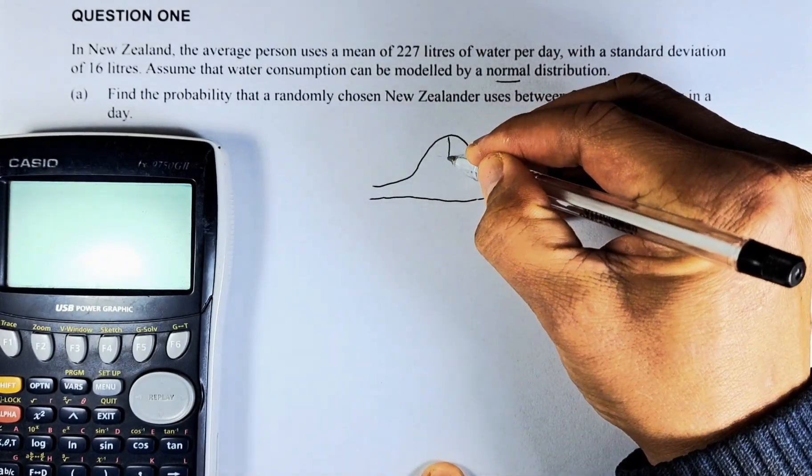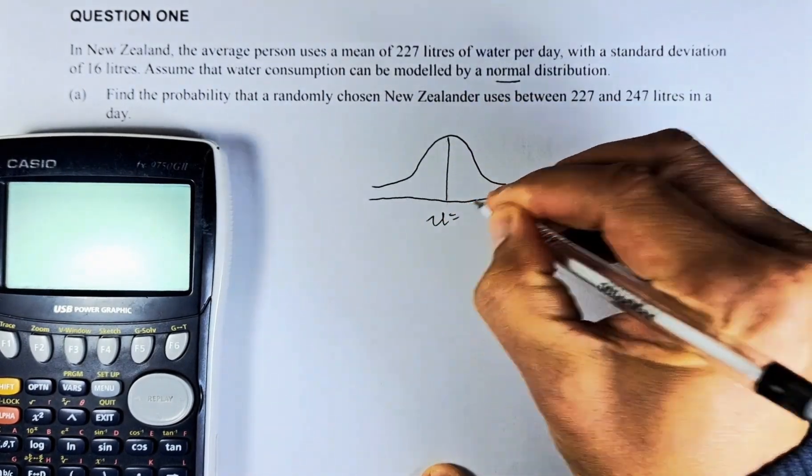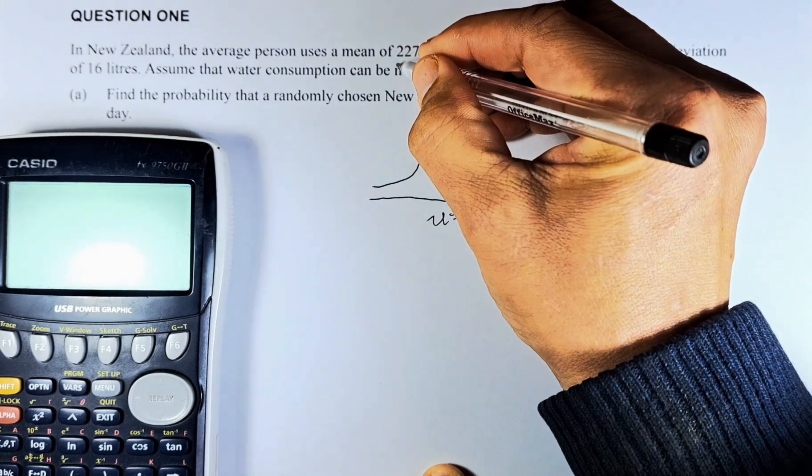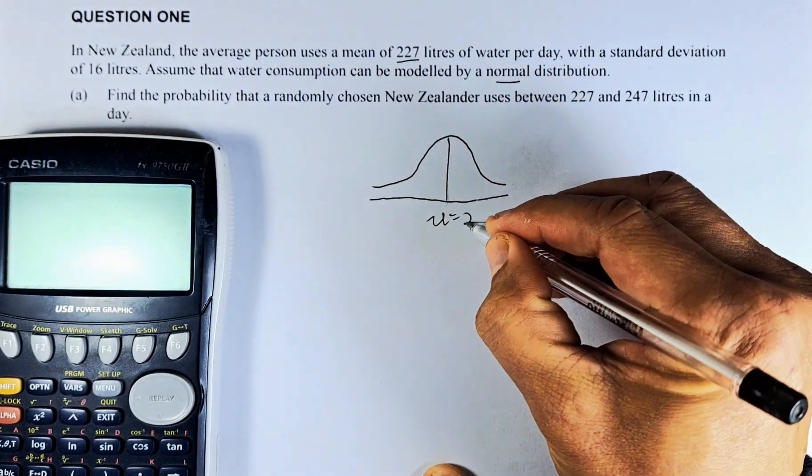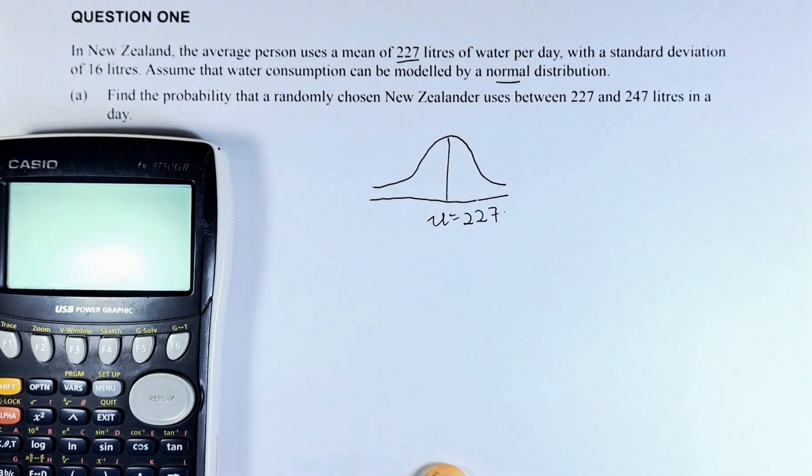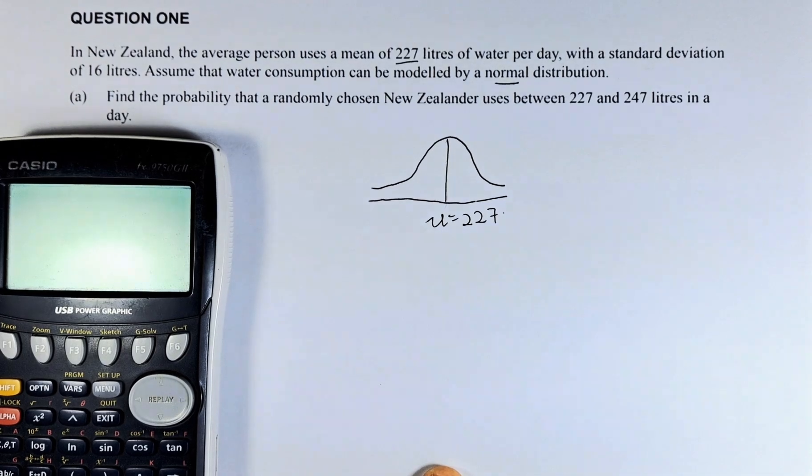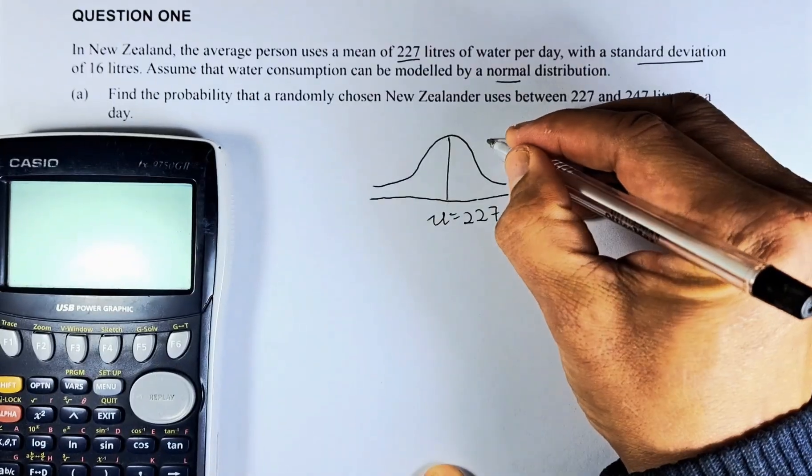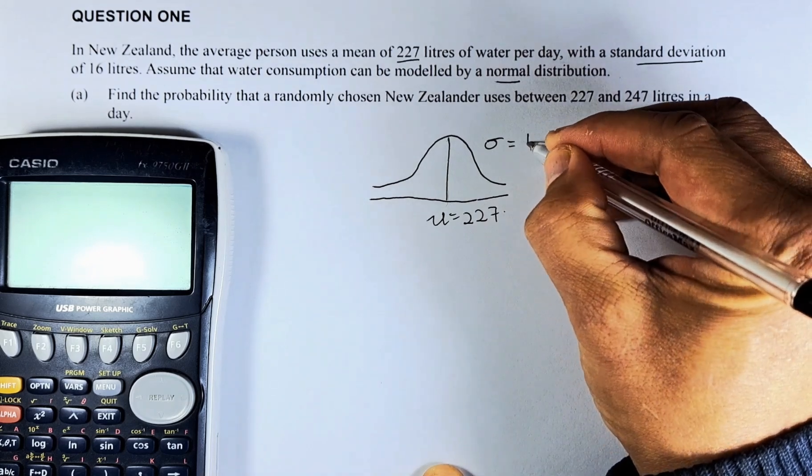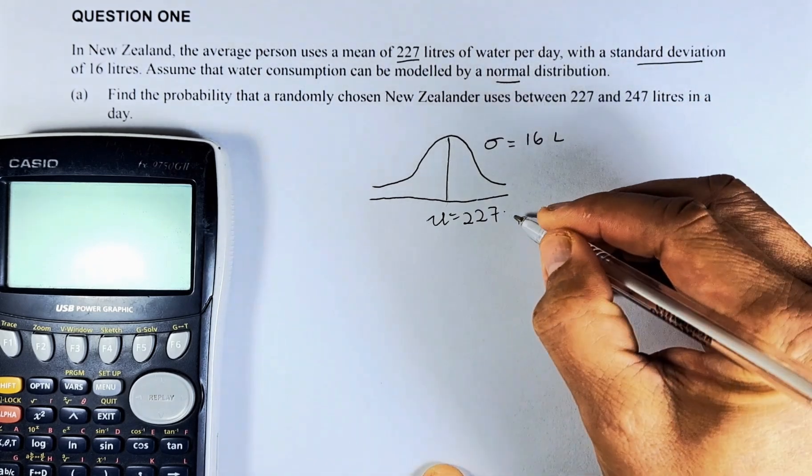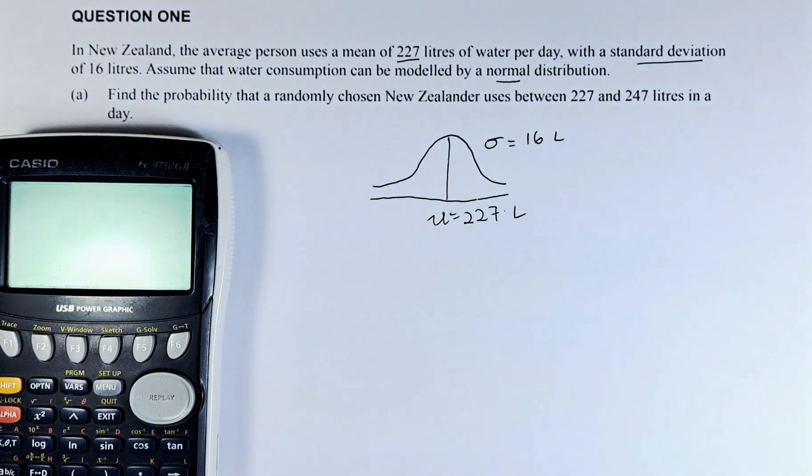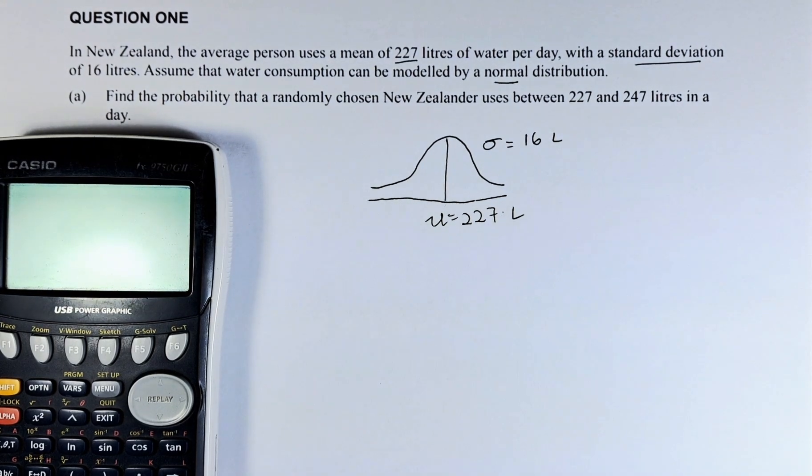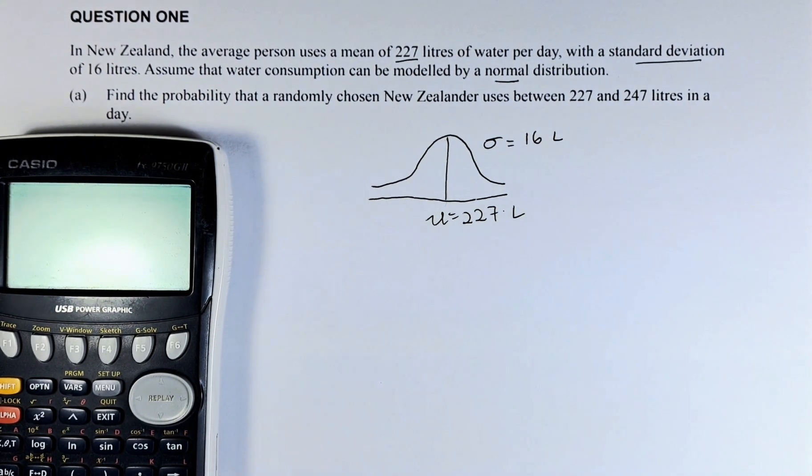The mean is represented by the letter Nu. Nu, given as the mean, is 227. And then the standard deviation, SD, is 16 litres, represented by the letter Sigma. So Nu is 227 and Sigma is 16 litres.